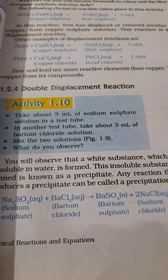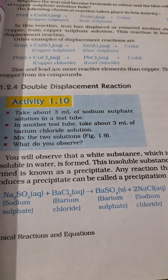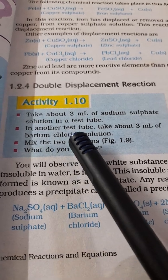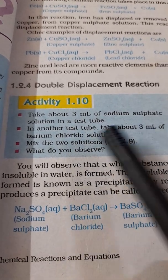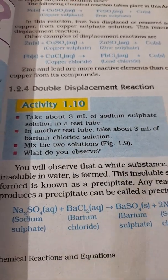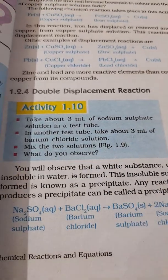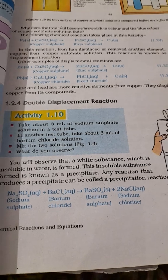Now we will see what is meant by double displacement reaction. Here a small activity: they are saying that you take 3 ml of sodium sulphate solution in a test tube and in another test tube you take 3 ml of barium chloride solution. Then you mix the two solutions. What do you see?